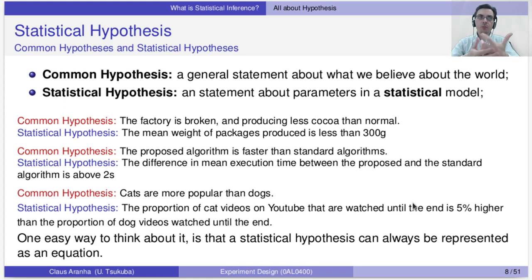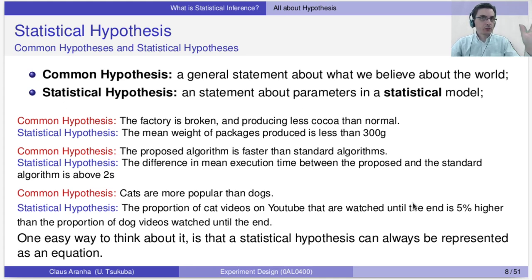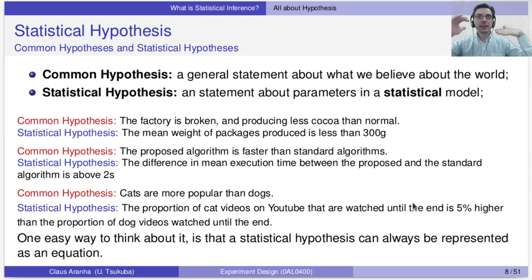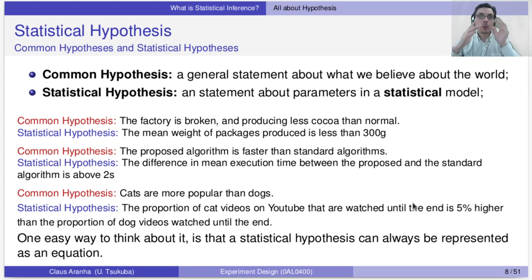Another example: common hypothesis — cats are more popular than dogs. How do we make a statistical hypothesis out of that? There are many different ways. We can say cats are more popular, so they will have more likes on YouTube videos. But 'more likes' is still not a statistical hypothesis — we have to make a model. Our model is: every YouTube video has a proportion of views. We can measure the proportion of cat videos watched and the proportion of dog videos watched, and say the proportion of cat videos is on average 5% bigger than the proportion of dog videos. One easy way to think about it is that a statistical hypothesis can usually be represented as an equation.